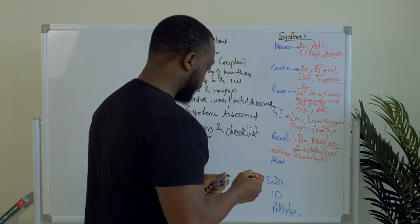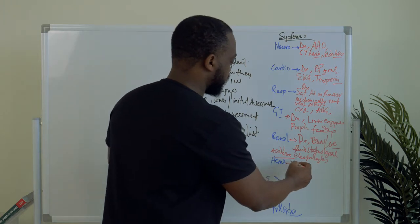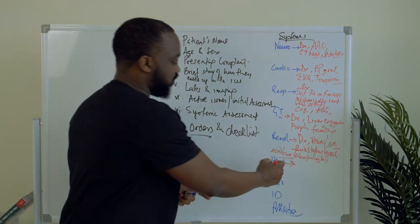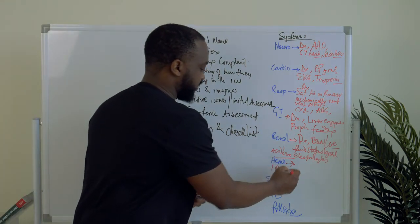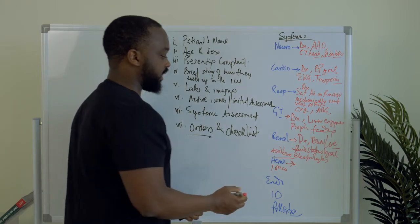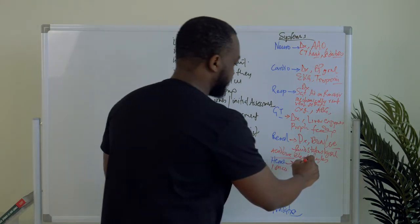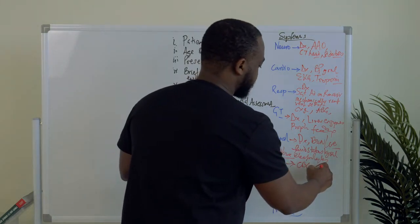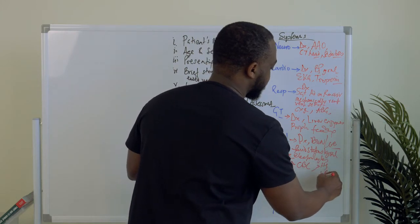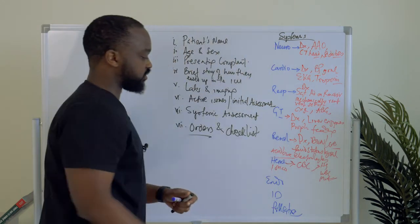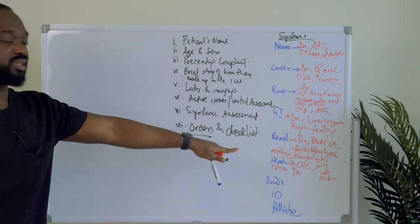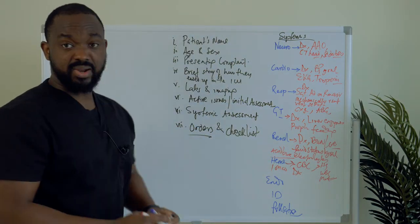Moving on, we talk about heme. If there's any oncology-associated diagnosis, you want to add that here — I like to put them together. But mostly with heme, I look at the CBC: what the hemoglobin is, WBCs, platelets, and any abnormalities associated with those. And like every system, if there's an associated diagnosis, you add it.